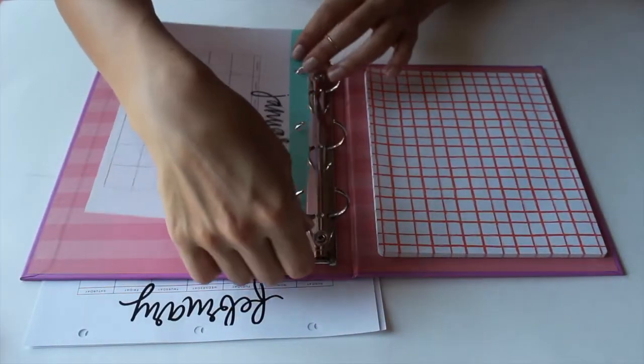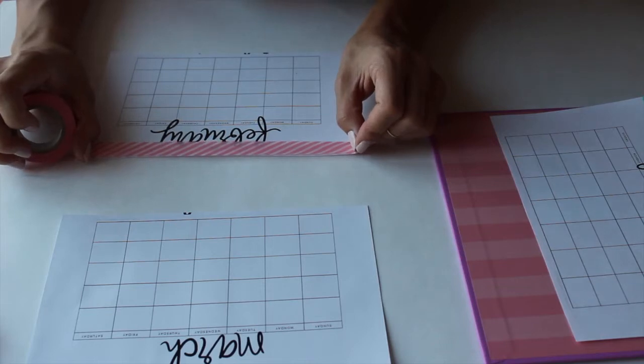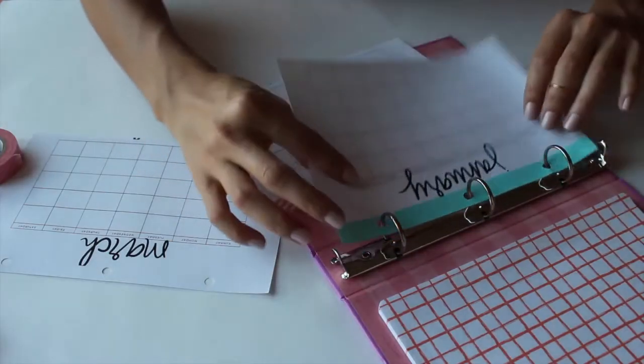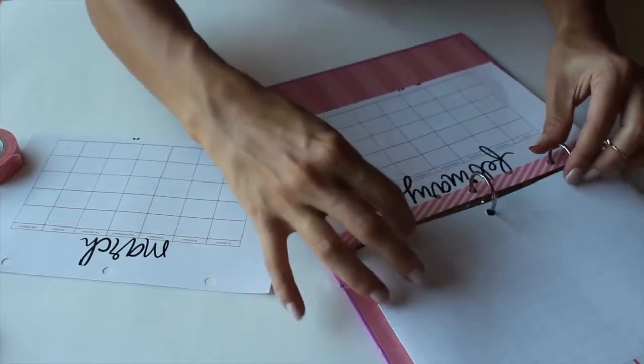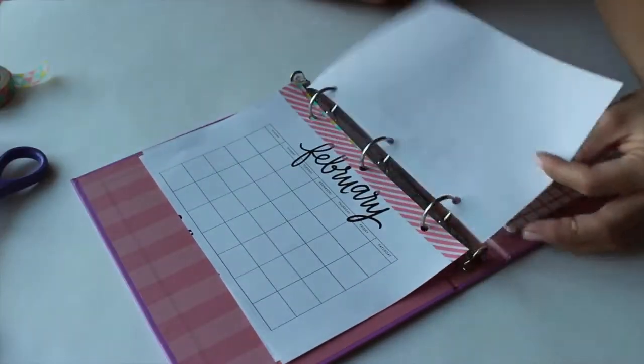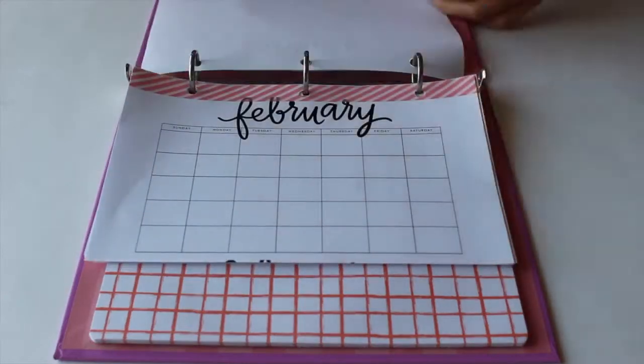You can write in the dates on this monthly calendar that I got, which means I can use it year after year and it stays the same. I really liked the layout of this. If you want a different layout, you can also pick a different calendar.